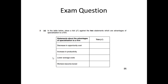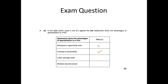Here is a simple exam question you can try out: place a tick against the two statements which are advantages of specialisation to a firm. 'Decrease in opportunity cost' — no, that's not related to specialisation. 'Increase in productivity' — yes, tick. 'Lower average cost' — yes, tick, because at the same cost with higher productivity you get a lower average cost. 'Workers become bored' — they do, but that is a disadvantage, not an advantage, so be aware of that in the exam.